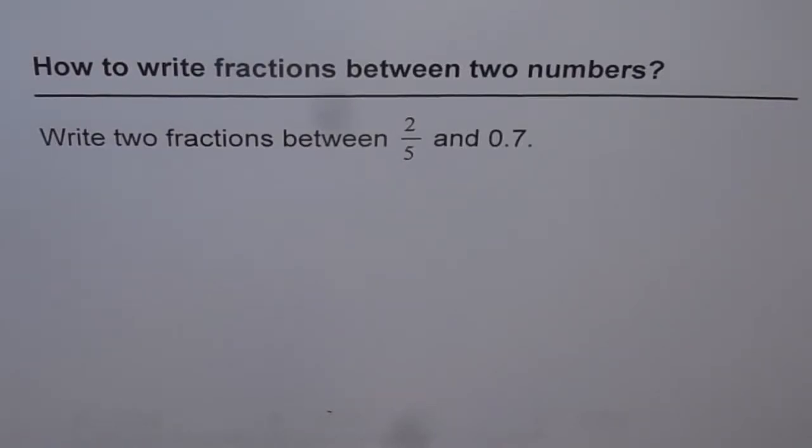How to write fractions between two numbers? Write two fractions between 2 over 5 and 0.7.